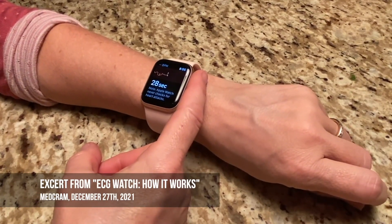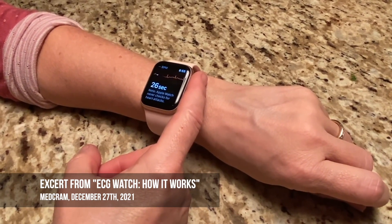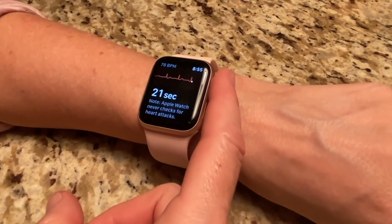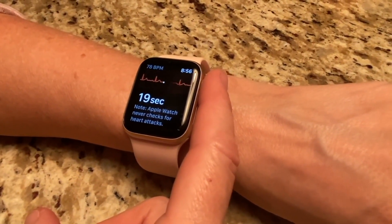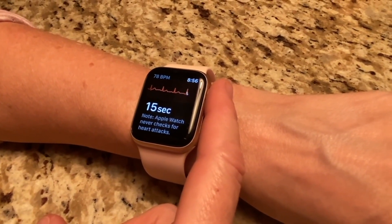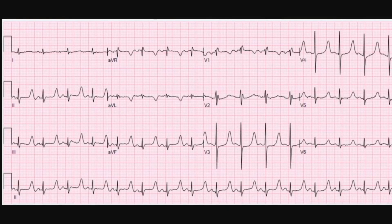Smartwatches have been around for a long time, but some of the newer ones have a feature called ECG, or electrocardiogram. This feature allows your watch to monitor the electrical pulses given off from your heart. An ECG is something you might get in a doctor's office or an emergency room — a way that a clinician can look at your heart and how it's beating based on the electrical conduction going down its conduction fibers.